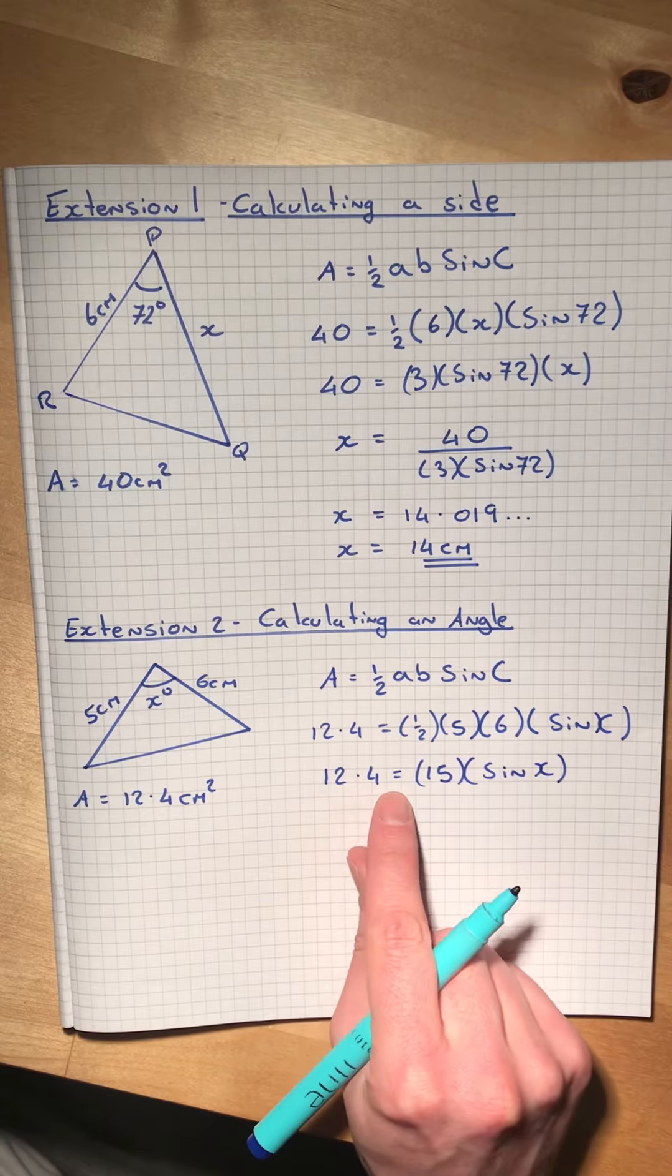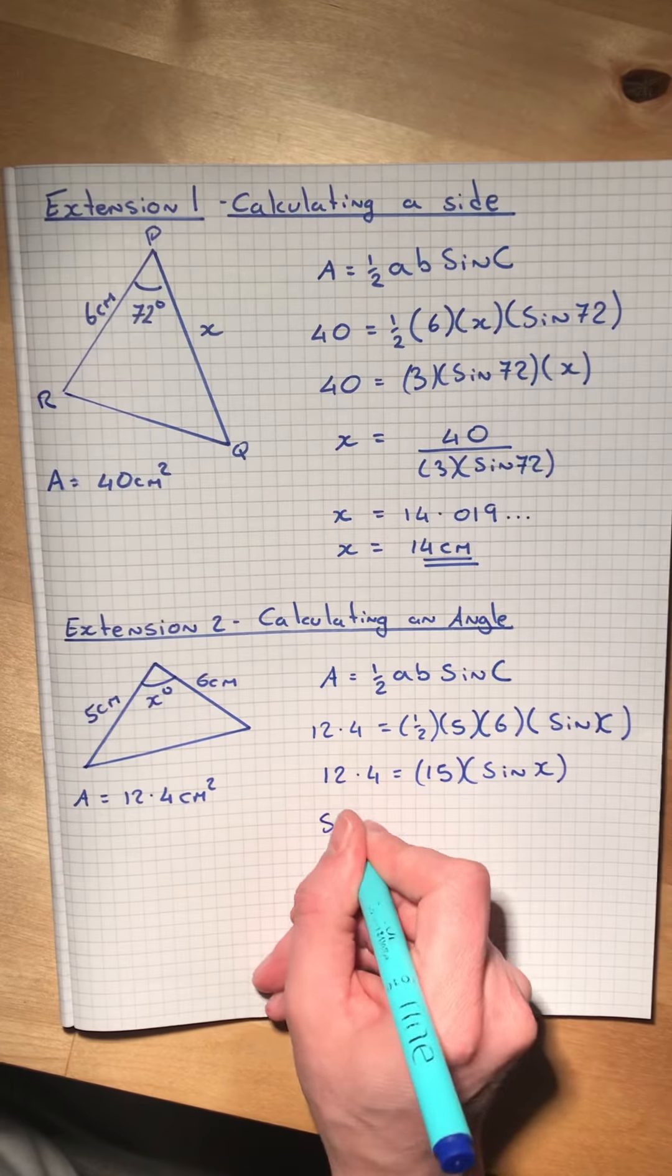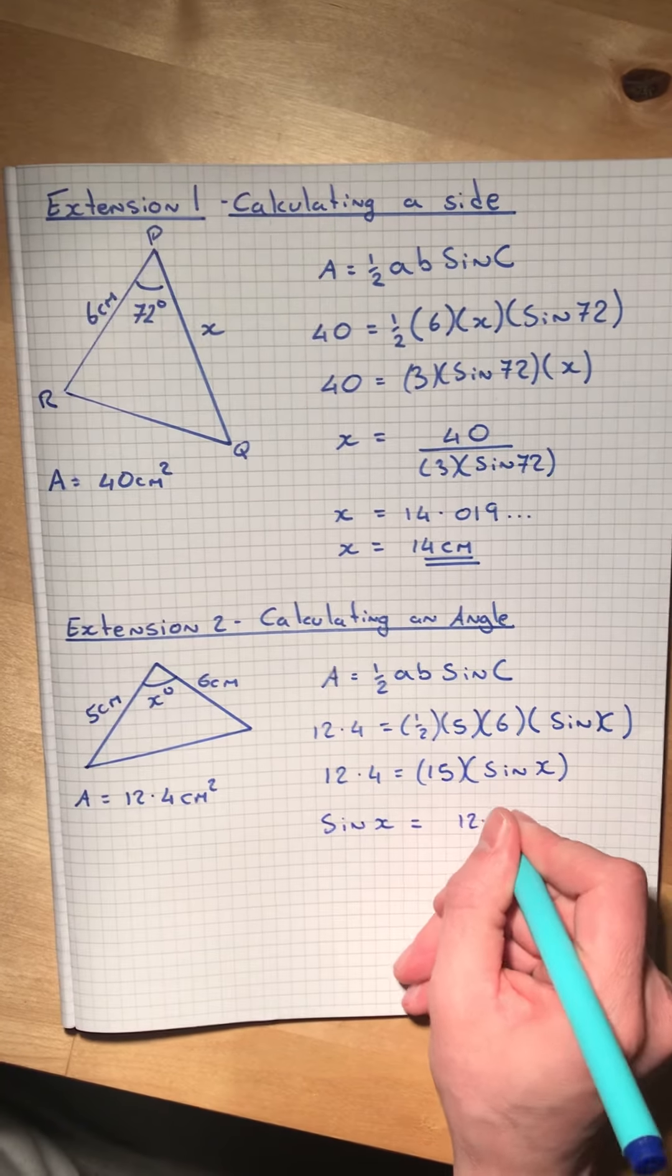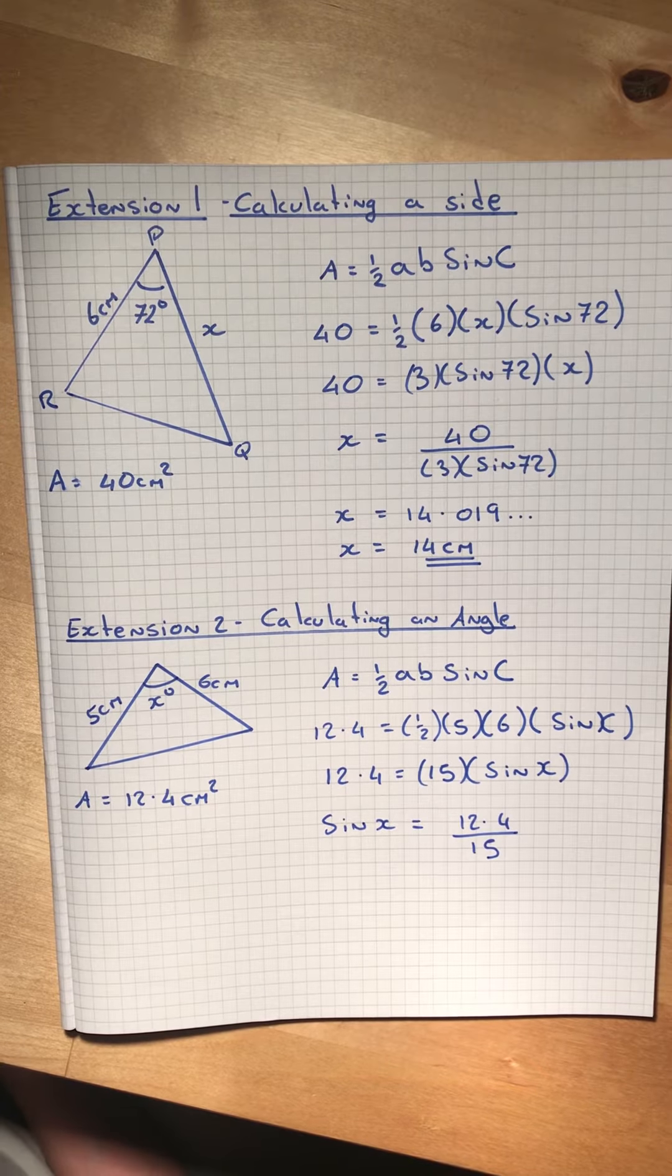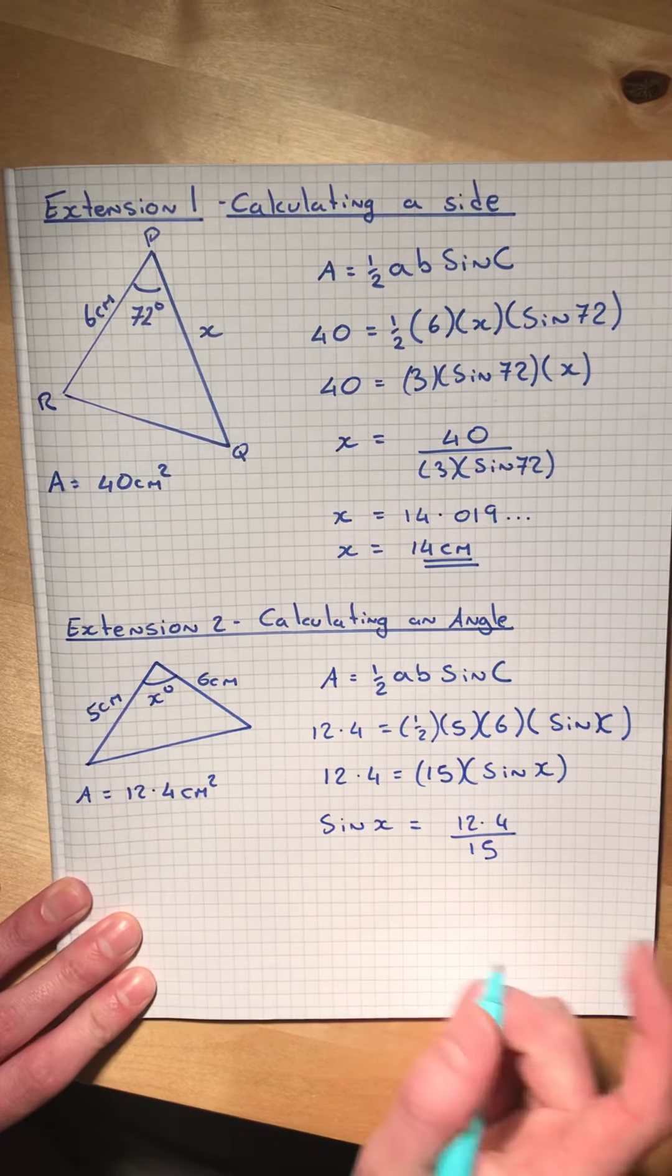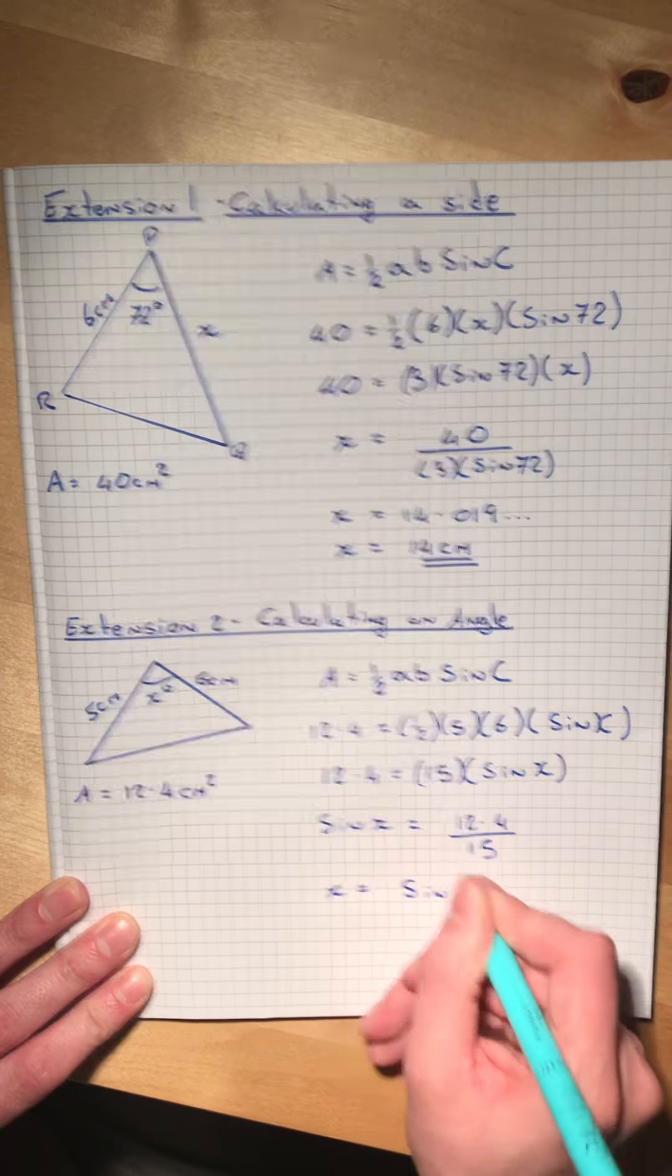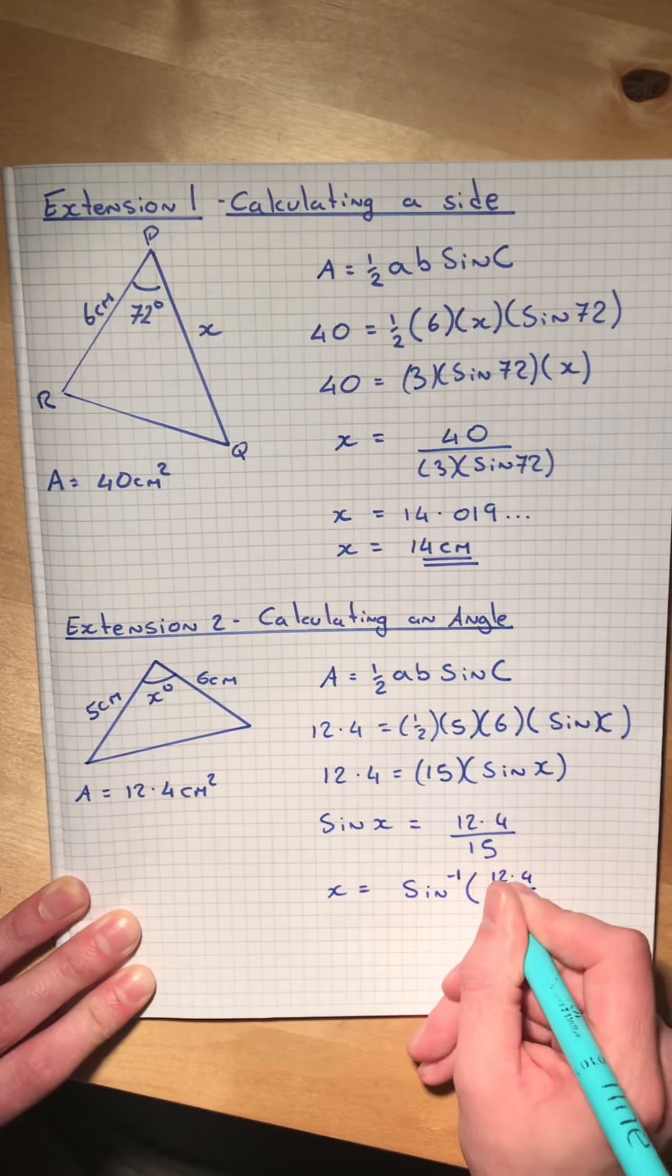So if 12.4 equals 15 times sine x, I can rewrite that to be sine x equals 12.4 divided by 15. Now if you can remember from right-angle trigonometry, when finding an angle, we rewrite that as x equals sine to the negative 1 of 12.4 over 15.